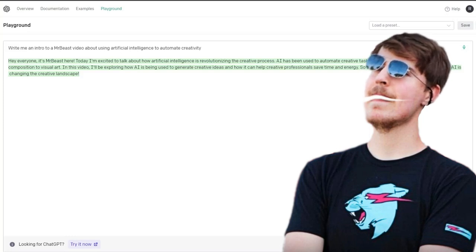Artificial intelligence has been used to automate creative tasks in a variety of industries, from music composition to visual art. In this video, I'll be exploring how artificial intelligence is being used to generate creative ideas and how it can help creative professionals save time and energy.